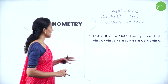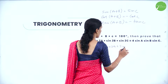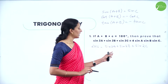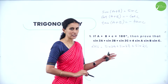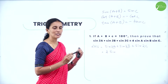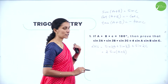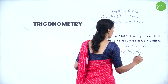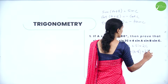Consider the left hand side: sin2A + sin2B + sin2C. Take the first two terms. This is in the form sinC + sinD, so we write 2·sin((2A+2B)/2)·cos((2A−2B)/2), which simplifies to 2·sin(A+B)·cos(A−B).